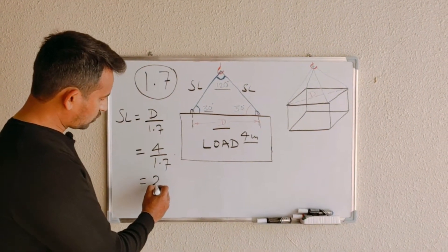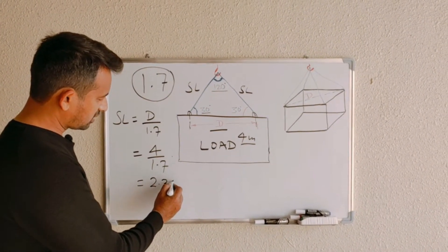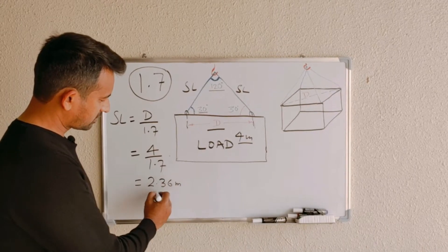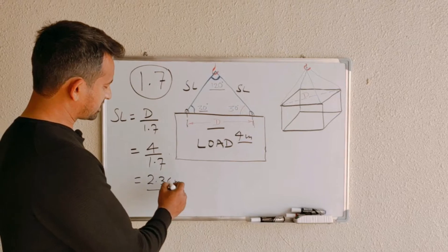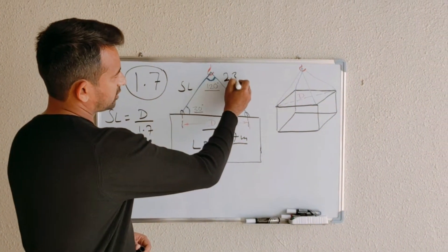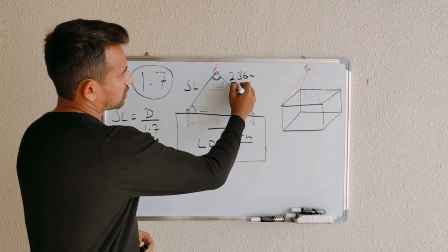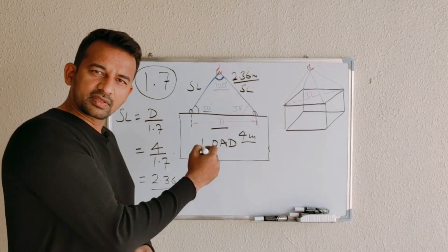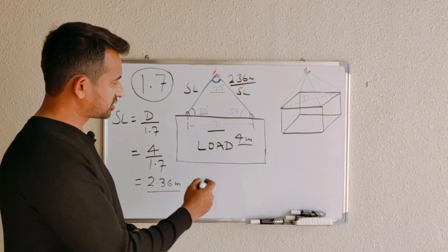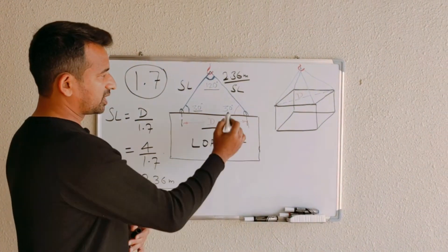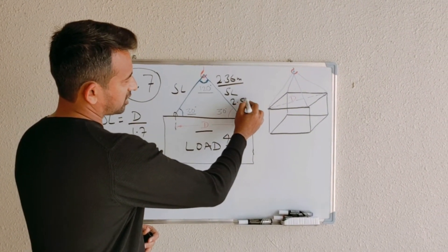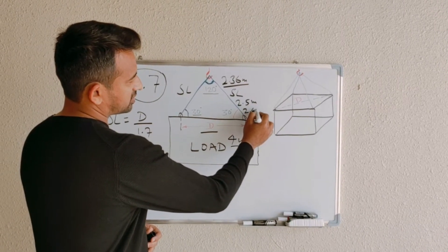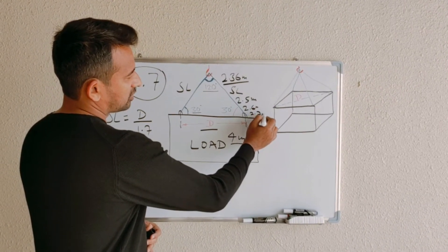It means if you maintain this length, 2.36 meters, you are making sure your sling angle is not exceeding 30 degrees. Anything more than this—2.36, 2.5, 2.6, 2.7 meters—will be okay.